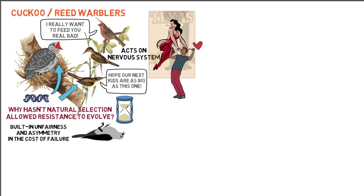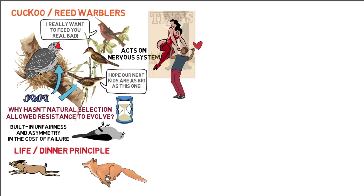Dawkins and John Krebs dubbed this the Life-Dinner Principle, referencing one of Aesop's fables: the rabbit runs faster than the fox because the rabbit is running for his life, while the fox is only running for his dinner. Furthermore, resistance to manipulation — for example, needing bigger eyes or bigger brains — may be costly to reproduction and never be passed down.